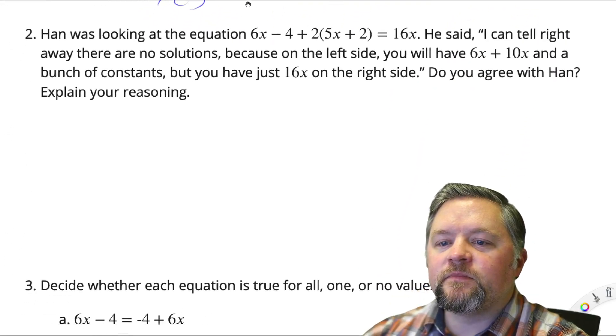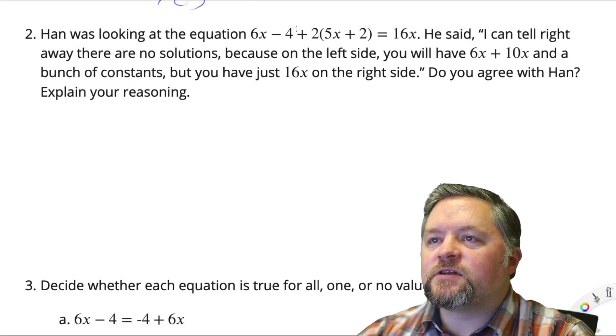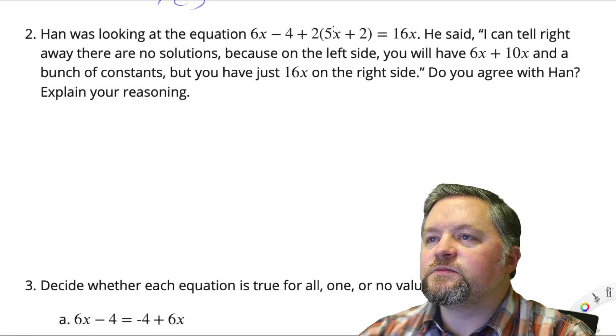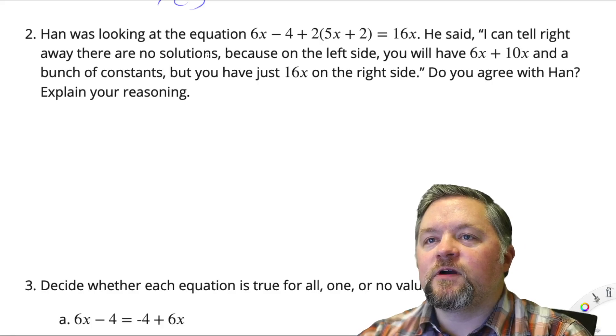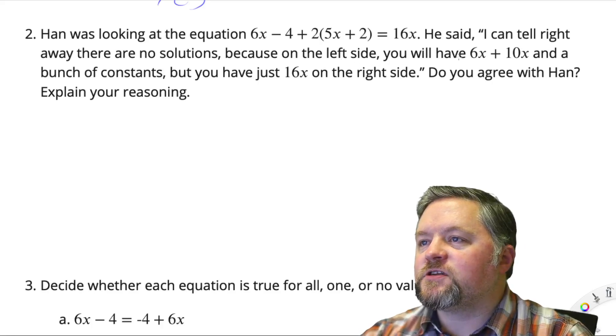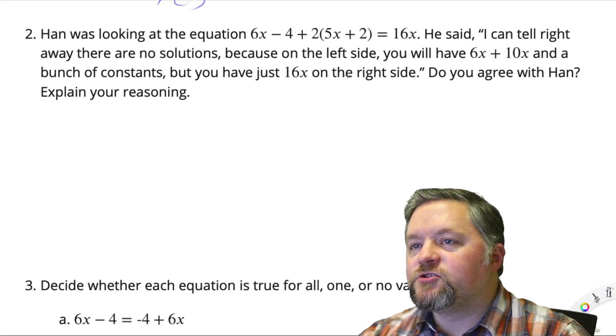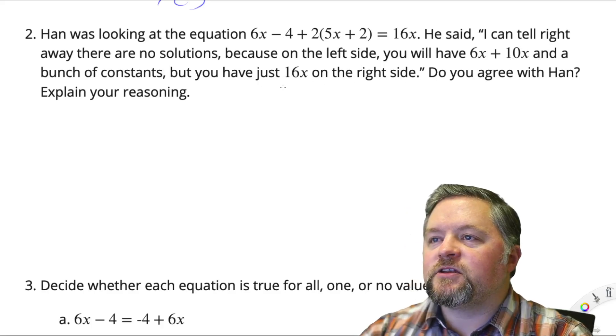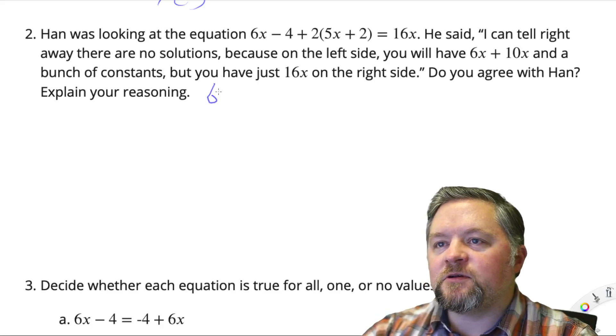Next problem. Hahn was looking at the equation 6x minus 4 plus 2 times 5x plus 2 equals 16x. He said, I can tell right away there are no solutions. Because on the left side you'll have 6x plus 10x and a bunch of constants, but you just have 16x on the right side. Do you agree with Hahn? Well, let's check this one. It seems like a very similar problem.